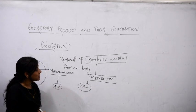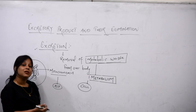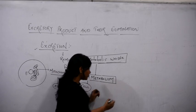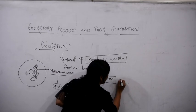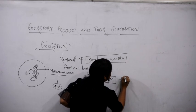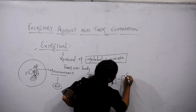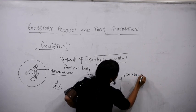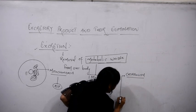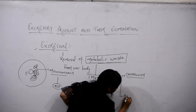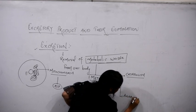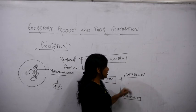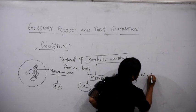These metabolic activities are occurring inside the cell, which is commonly known as metabolism. Metabolism can be of two types: it can be catabolism or it can be anabolism. Catabolism means breakdown reactions.